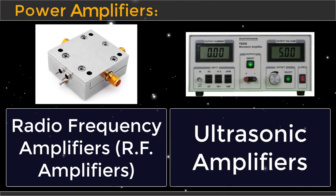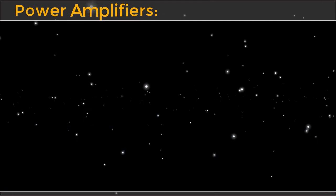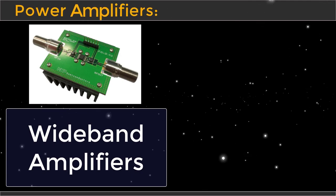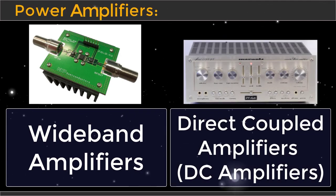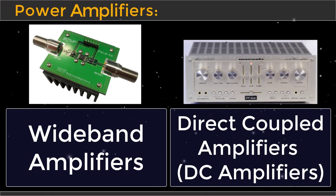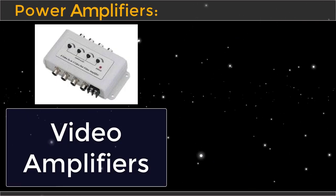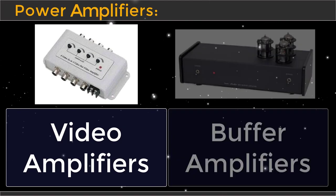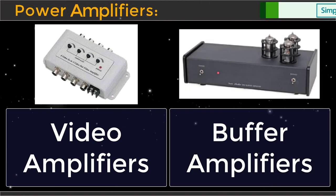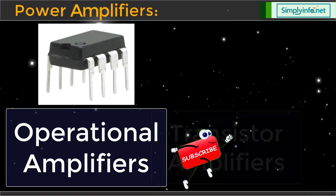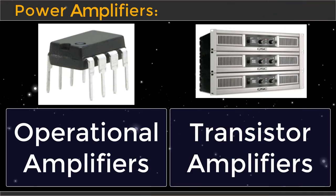4. Ultrasonic Amplifiers. 5. Wideband Amplifiers. 6. Direct Coupled Amplifiers, called DC Amplifiers. 7. Video Amplifiers. 8. Buffer Amplifiers. 9. Operational Amplifiers. 10. Transistor Amplifiers, etc.